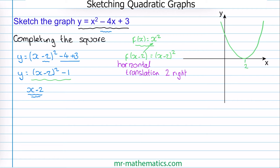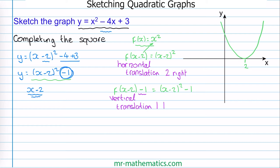The next part: we have a negative 1 in our equation. So we're going to add this to our function notation, where we have f of x minus 2 and then we're taking away 1. This gives us x minus 2 all squared take away 1. And this is another translation, but this time a vertical translation where we're moving the curve one unit down.